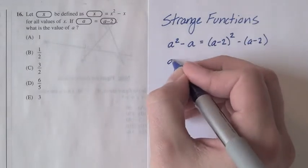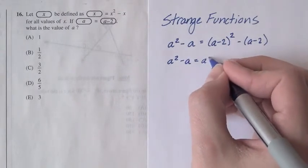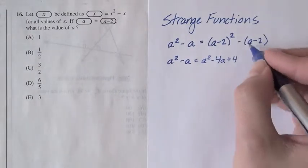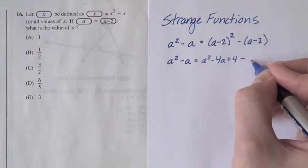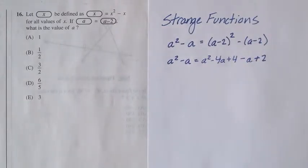Let's start expanding this. This remains a squared minus a. Let's square this out. So that's a squared minus 4a plus 4. And then let's distribute this negative sign: minus a plus 2.